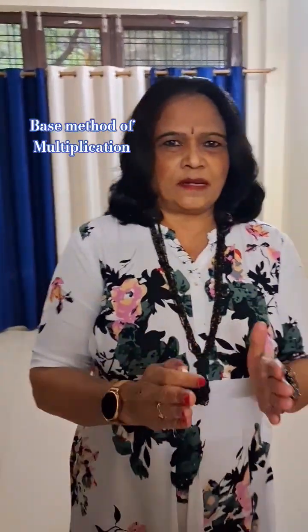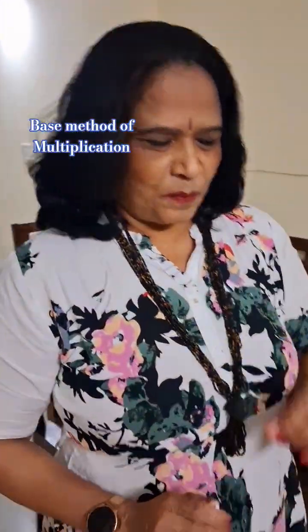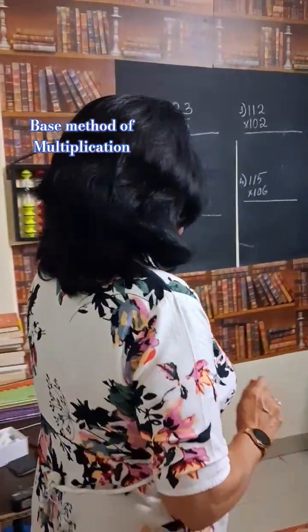Base means 10, 100, 1000, 10,000 - all those are called base. How to do this multiplication? Let us see it.